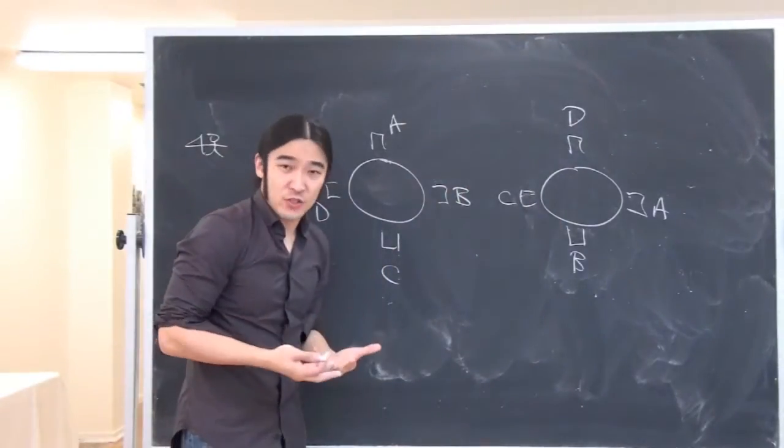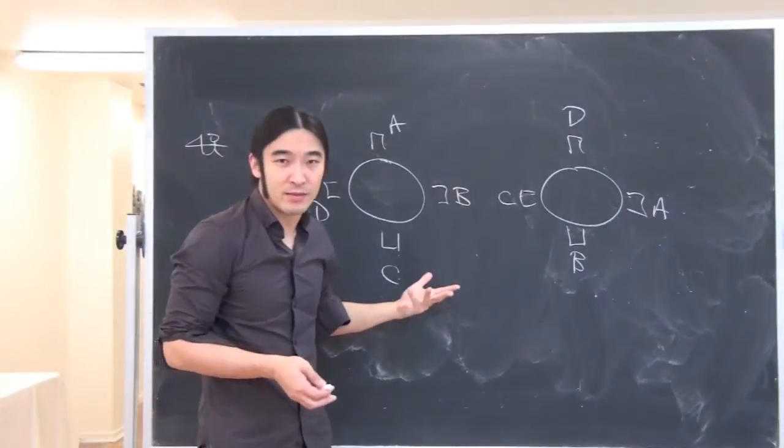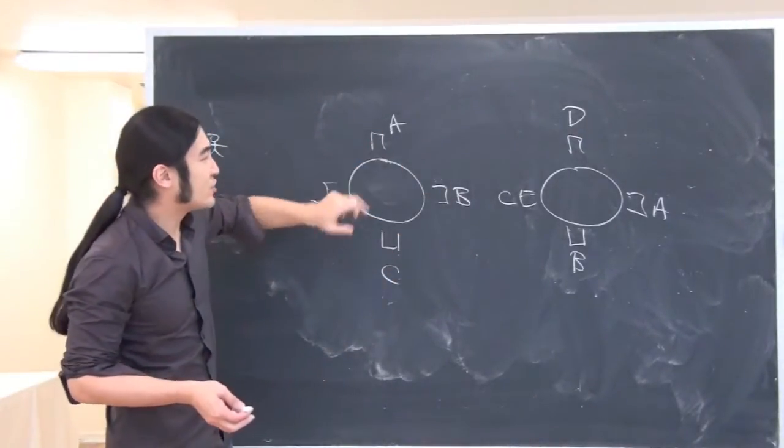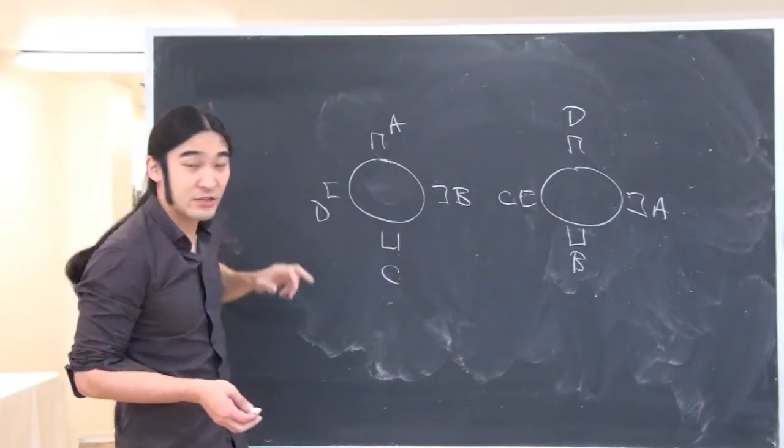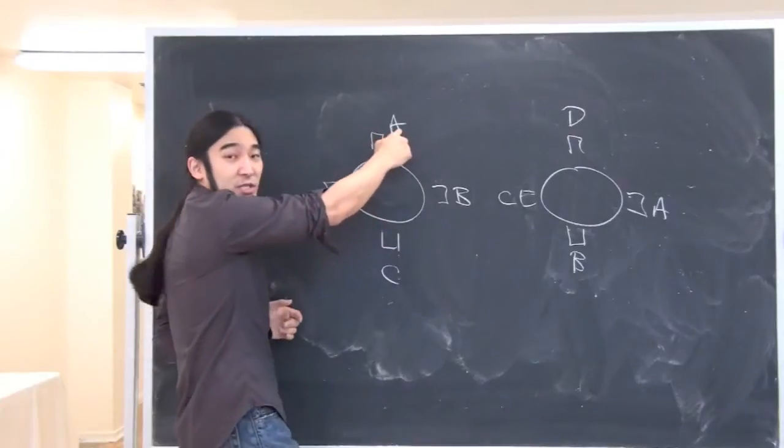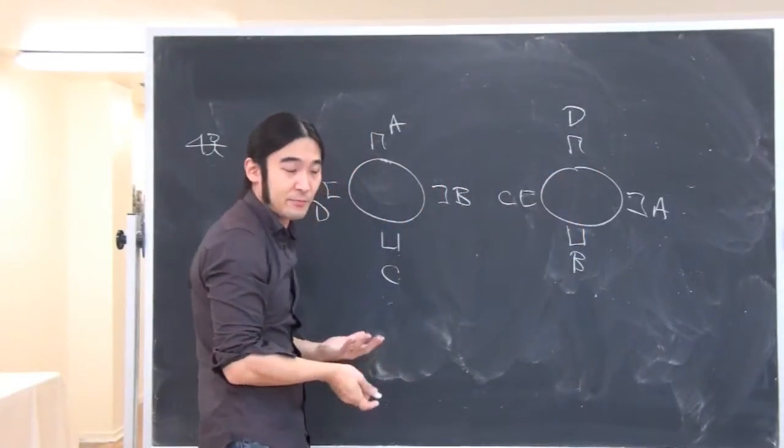Depending on what the question is. For example, if I had a question where I said, how many ways can I arrange four people around the table where you could tell the chairs apart? For example, if this were the red chair, the blue chair, the orange chair, and the green chair, then these are different arrangements. Because in the red chair, we'd have person A. But over here, in the red chair, we'd have person B. Those would be different.